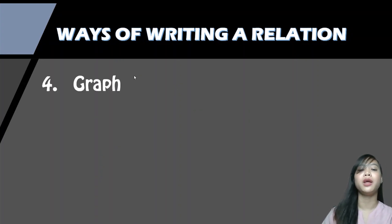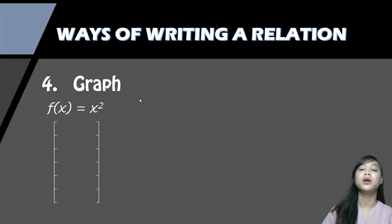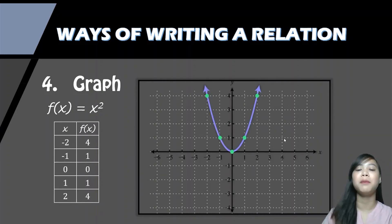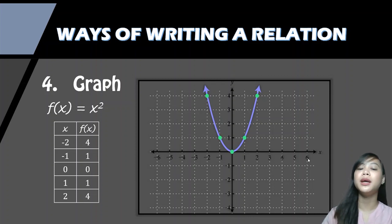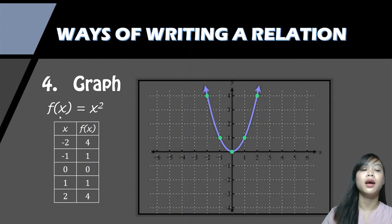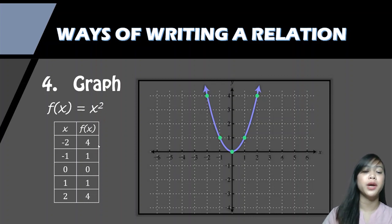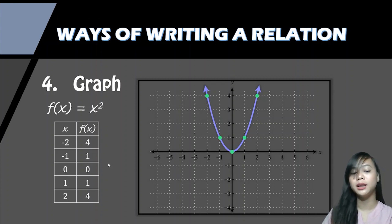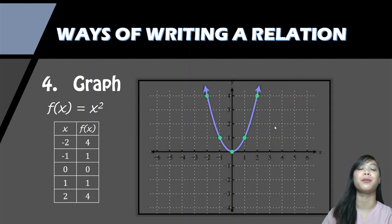The last way to write a relation is a graph. This graph comes from the function f(x) = x². By substituting x values: negative 2 squared equals 4, negative 1 squared equals 1, 0 squared equals 0, 1 squared equals 1, and 2 squared equals 4. By plotting these ordered pairs into the Cartesian plane, we can form this graph, which is a parabola.